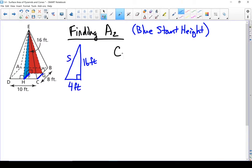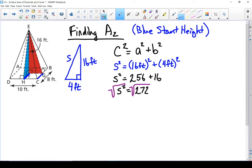Let's use Pythagorean theorem. Put in what we know. And now let's calculate that slant height. There's my blue slant height.